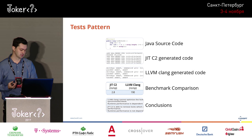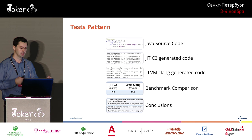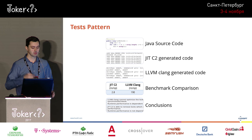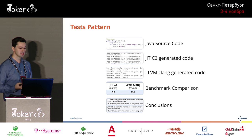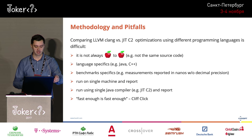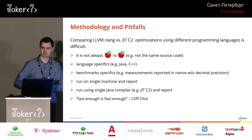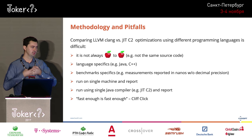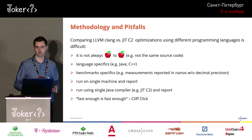In terms of how I structured the presentation: first we'll study a trivial piece of Java source code at a high level, then zoom into JIT C2 and LLVM Clang generated code, some benchmark comparisons, and conclusions. I can also share some pitfalls of my methodology. It's not always easy to compare these approaches — it's not always apples to apples.